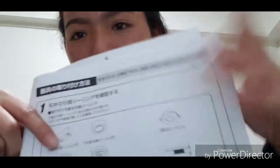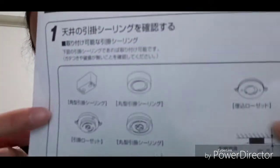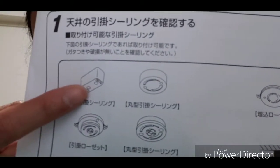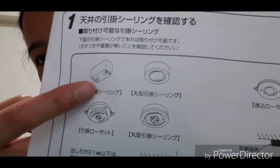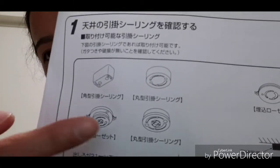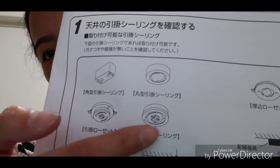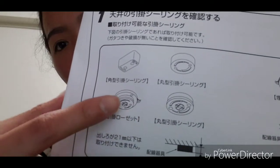of course, you have to check first the socket that you have in your apartment. So ceiling light sockets here in Japan could be in rectangular form, which is this one, and also the round shape, this one, and also this, and this one.